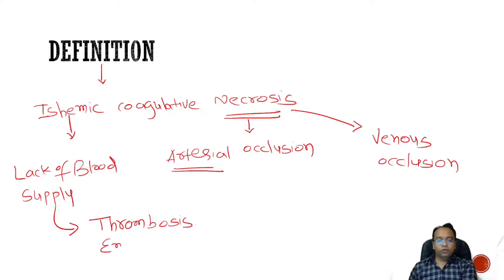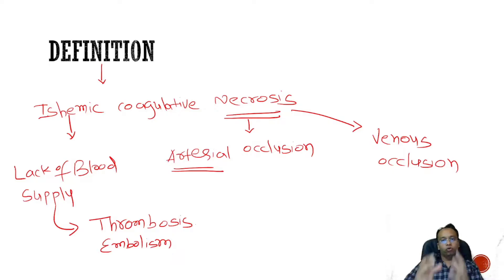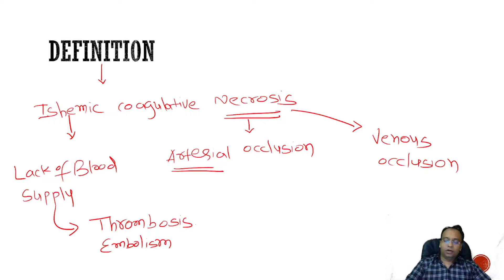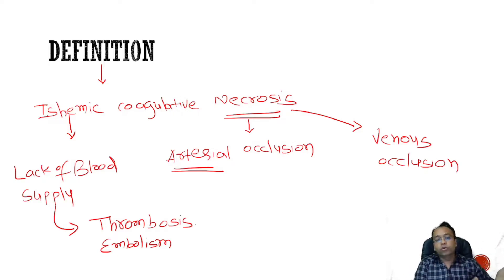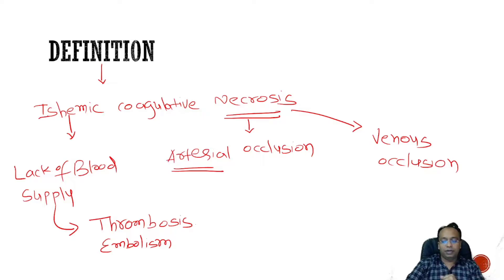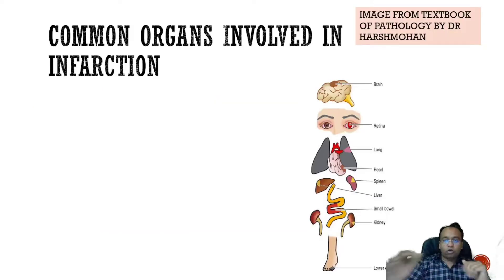The common cause of lack of blood supply or ischemia is occlusion by thrombosis. Sometimes it could be due to embolism, so thromboembolism is a common cause of occlusion and lack of blood supply in an organ, which leads to coagulative necrosis. We have discussed the mechanism of cell injury and coagulative necrosis in detail in the cell injury chapter.